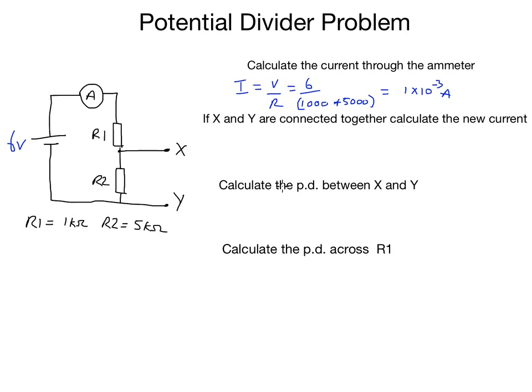If X and Y are connected together, calculate the new current. If X and Y are connected together, I'll draw it with a dotted line here just so you can see. The easiest path for the current to follow is through the new segment of the circuit, which means it will bypass R2 altogether.